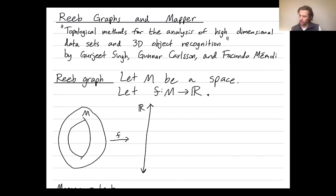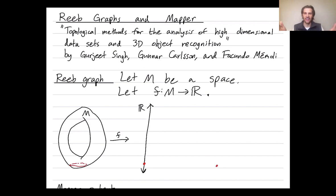So how do you get the Reeb graph? At each real number, you can look at the pre-image under F. You ask: what are all the points in my space M whose value under F is that specific real number? For that red point — that real number — its pre-image is a circle. The Reeb graph is going to encode the number of connected components in each pre-image. The circle is connected, so there's one connected component. Now imagine raising your height, raising that real number. As I raise that real number, for a while I still just have one connected component.